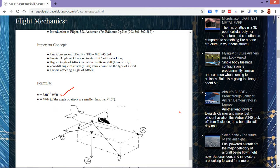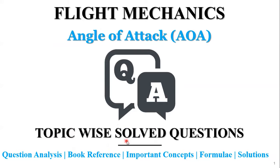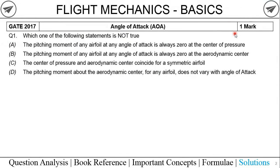It is better to know how we arrived at this formula and how to use it. Now let's get solving. Here we have a past question — a one-mark question from GATE 2017. The question reads: which one of the following statements is not true? Read the question carefully because we need to find the wrong statement. Option A states: the pitching moment of any airfoil at any angle of attack is always zero at the center of pressure.